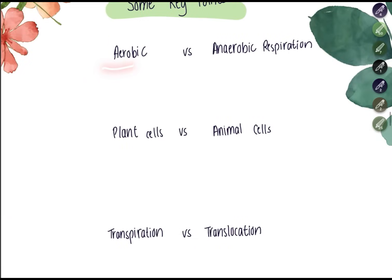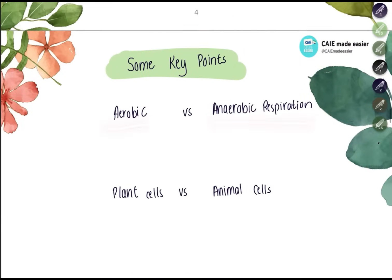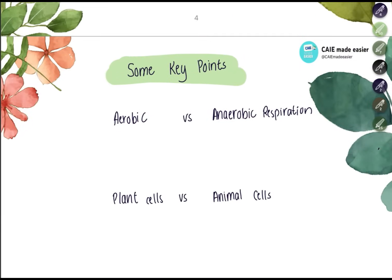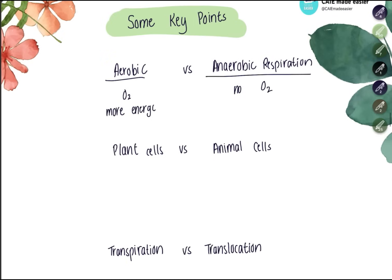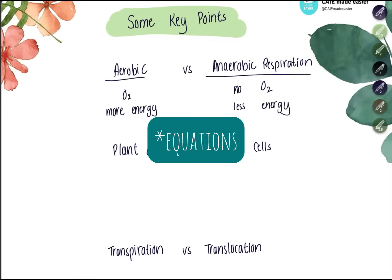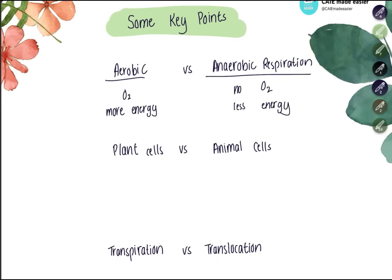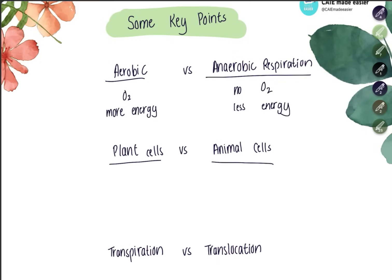Comparing aerobic versus anaerobic respiration: aerobic respiration requires O₂ and produces more energy and more ATP molecules, whereas anaerobic respiration does not require O₂ and produces less energy.